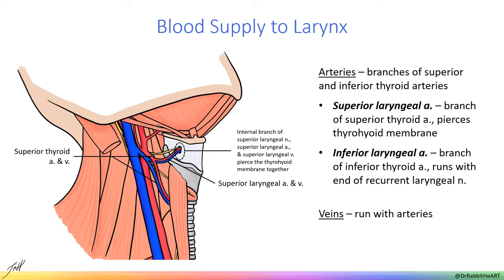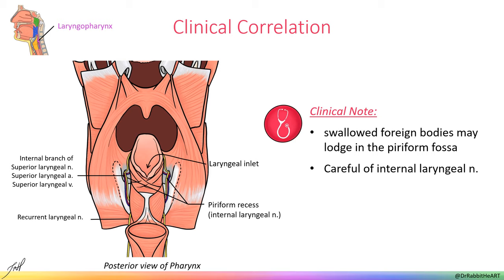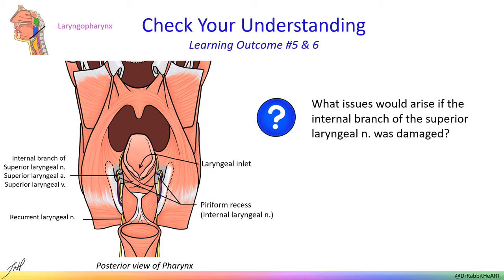Earlier, we mentioned foreign objects may become lodged in the piriform fossa in the laryngopharynx. When removing those foreign objects, you must be careful because the internal branch of the superior laryngeal nerve runs just deep to the mucosa of the piriform recess after passing through the thyrohyoid membrane with the superior laryngeal artery and vein. This nerve could become damaged during the procedure. If you did damage the internal laryngeal nerve, the result would be loss of sensation above the vocal folds.